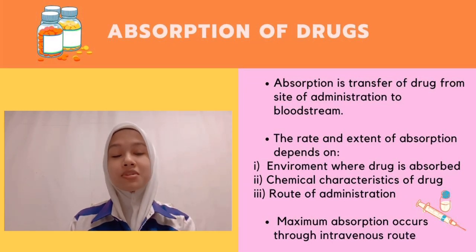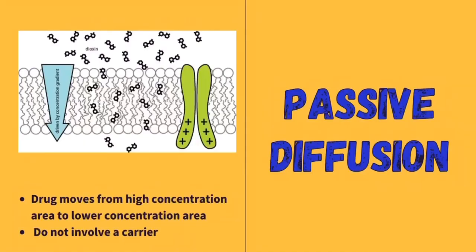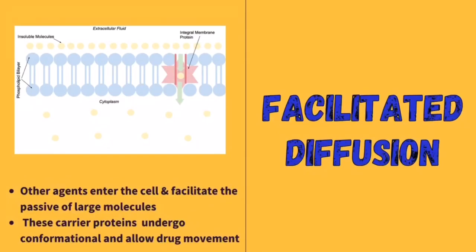There are four ways drugs can be transported from the GI tract. The first is passive diffusion, which is the most common mechanism in drug absorption. In this process, the drug moves from a high concentration area to a lower concentration area and does not involve a carrier.